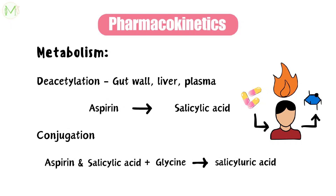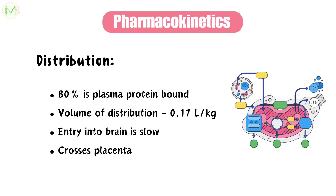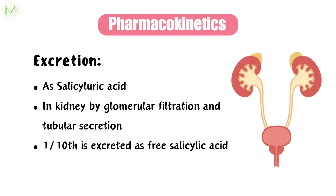The salicylic acid is set free to perform its function, as it is the active form of aspirin. Both aspirin and salicylic acid are conjugated in the liver with glycine to form salicyluric acid. Approximately 80% of the distributed drug is bound to plasma protein and the volume of distribution is approximately 0.17 liters per kilogram. It enters the brain slowly and has the ability to cross the placenta. Excretion mainly occurs in the form of salicylic acid along with a few other minor metabolites by glomerular filtration and tubular secretion, and only one-tenth is excreted as free salicylic acid.